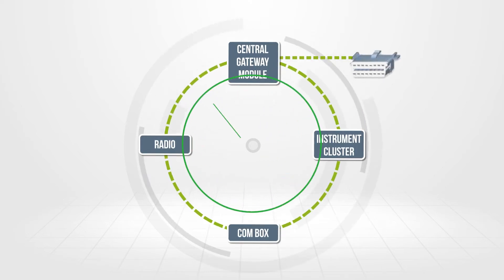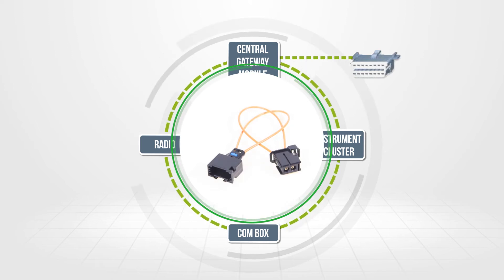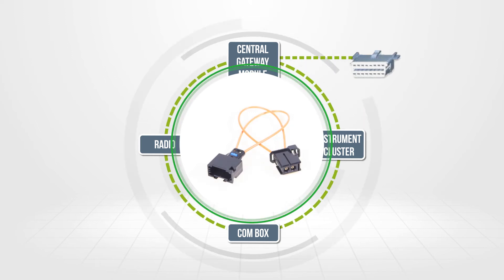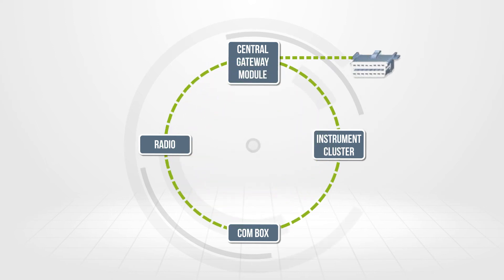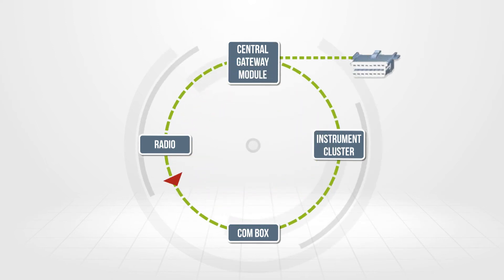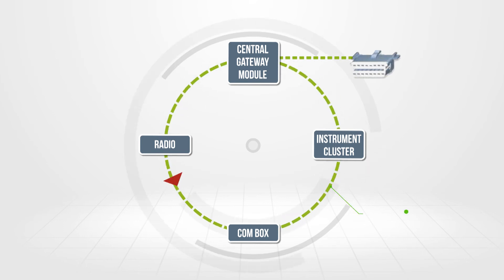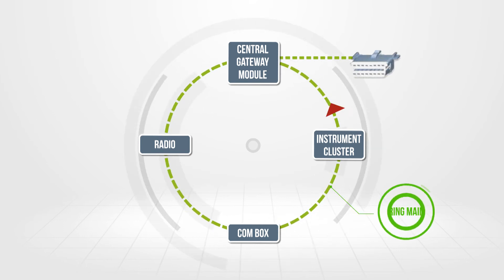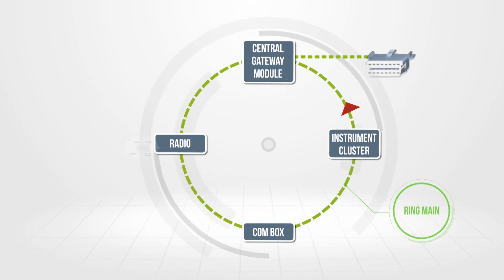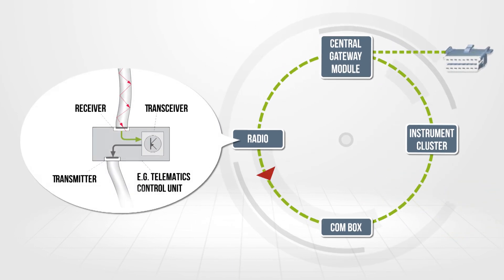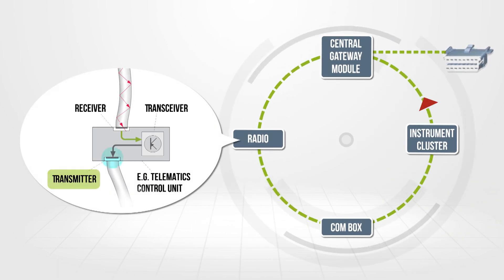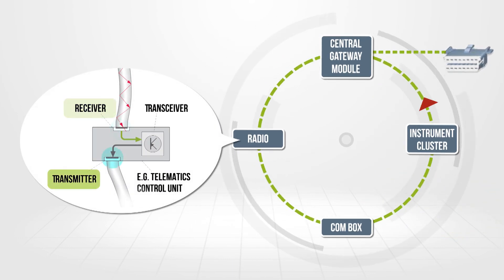Along with some knowledge of the system under test, we need to use a systematic approach and a few simple yet specialized tools to make the correct diagnosis. Data transfer in a MOST network travels in one direction only. If we look at the topology, we can see it is formed as a circle, commonly called a ring main. Each control module has an optical transmitter and a separate receiver for data transfer.